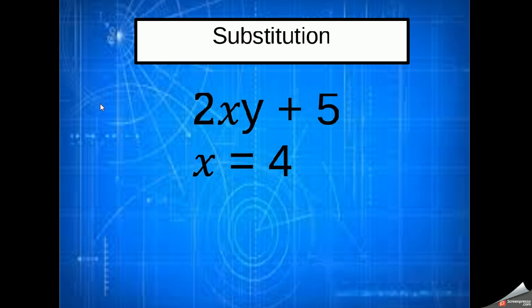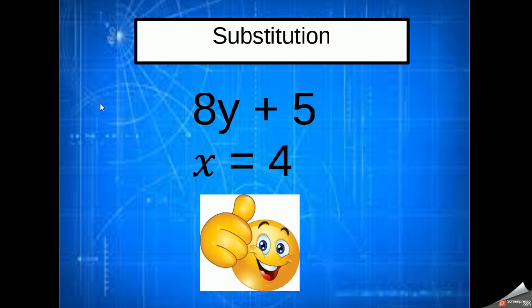2xy plus 5, and we're told that x is equal to 4. So I'm going to replace the x with a 4, and because the 2 is next to the x I've got to put a times sign in. And remember, this is 2 times 4 times y, because there's an invisible times sign between the 4 and the y, plus 5. Because of that I can simply do 2 times 4. 2 times 4 is 8, leaving me with 8 lots of y. I can't simplify any further because I don't know the value of y. By substituting x is equal to 4, I've got 8y plus 5.